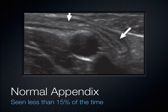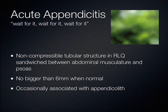You start around the terminal ileum area and mow the lawn down in the right lower quadrant — transverse, sagittal — trying to find that structure. Burn that image in your mind. As you get proficient with ultrasound over the next four years, if any clinician has a shot at finding a normal appendix, it's going to be you. When you look for the appendix, you're searching for that non-compressible tubular structure in the right lower quadrant that gets sandwiched between the abdominal musculature and the psoas muscle.